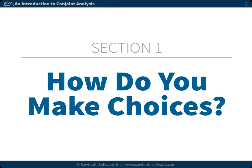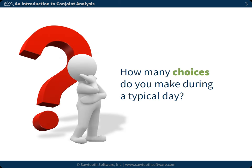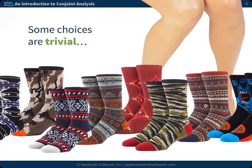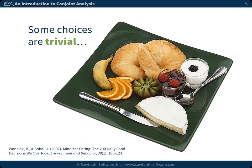How many choices do you make during a typical day? Each day you make thousands of them. Some choices are trivial, like choosing which pair of socks to put on in the morning, or what to eat for breakfast. In fact, on average, people make 227 food-related decisions each day.